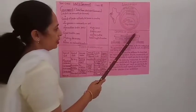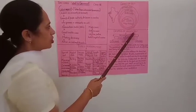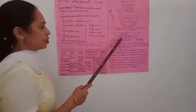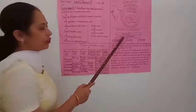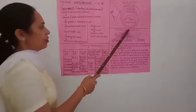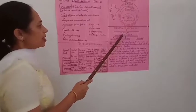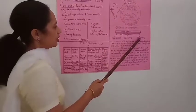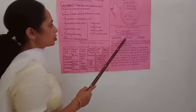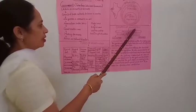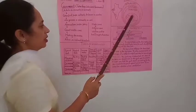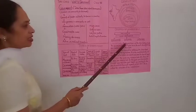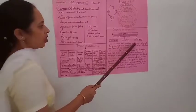Organs of government: we have the president and vice president as part of the government. Then comes the legislature, the executive, and the judiciary — these are the organs of government. First one is the legislature: the legislature is the law making body.